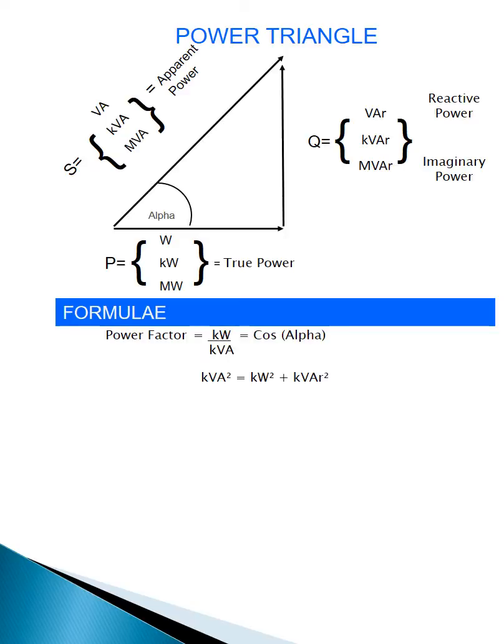The most well known of course is the definition of power factor as kilowatts over kVA, or the cos of alpha. And of course Pythagoras: kVA squared equals kilowatt squared plus kVAR squared.